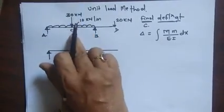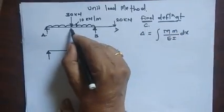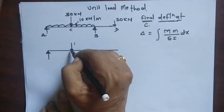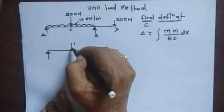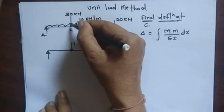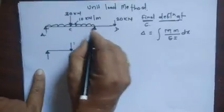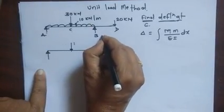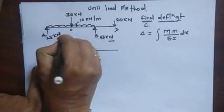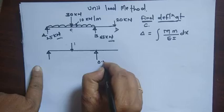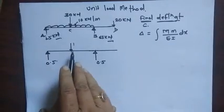This is our beam ABCD, subject to a distributed load on AB, a 30 kN load at the center, and a 20 kN overhang. We require the deflection at C, the center. The procedure is to apply a unit force at the point where we require the deflection, in the direction of desired deflection — here, downward at C. The reactions for the actual load are 65 kN and 25 kN, and for the unit force case, 0.5 and 0.5.